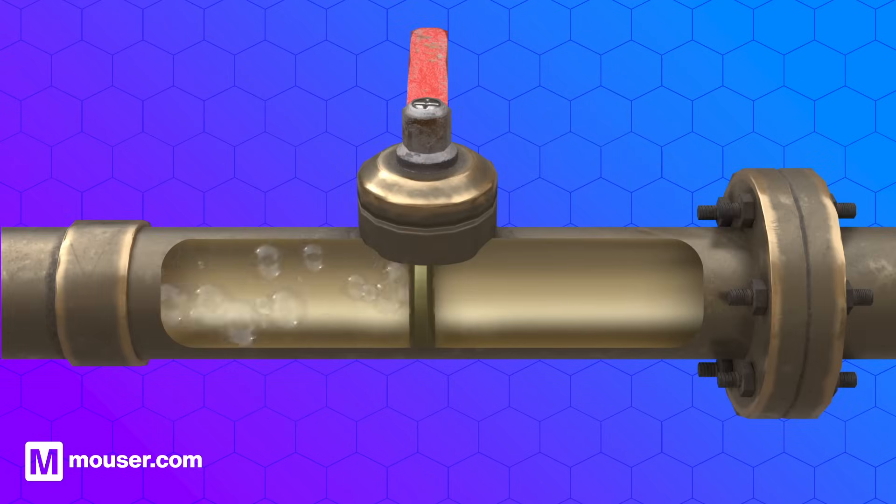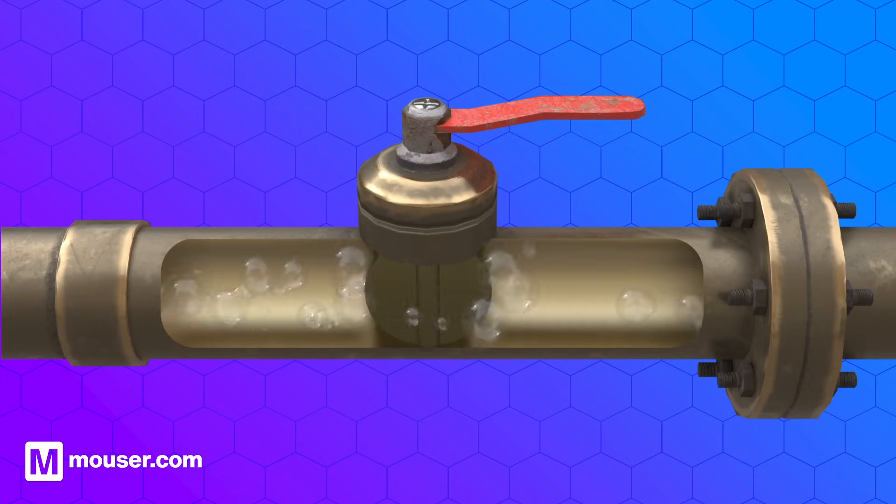You can think of IGBTs as a valve in a water pipe. Just as a valve controls the flow of water, an IGBT manages the flow of electricity. It can either allow the current to pass through or block it, much like opening or closing a valve to control the water flow.